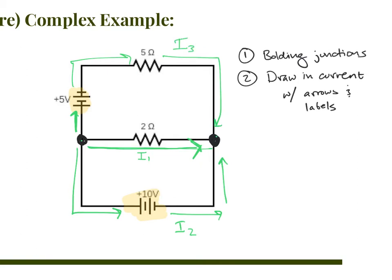The direction chosen doesn't matter; you just have to choose one. After drawing in the currents, we draw in loops. We've got two main loops: loop one on the left side — I'll choose a clockwise direction — and loop two on the bottom right. There's technically a third outer loop, but it gets absorbed into the other equations, so it doesn't matter. We choose a direction to evaluate each loop, and setup is done.